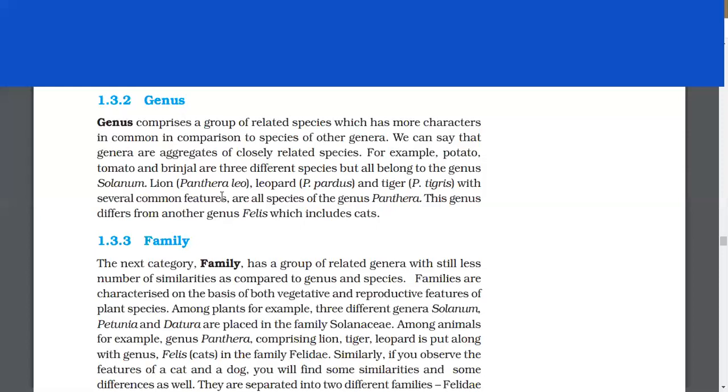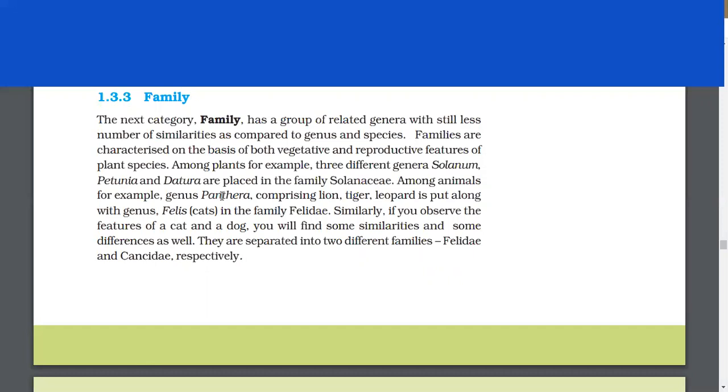Family. The next category, family, has a group of related genera with still less number of similarities as compared to genus and species. Families are characterized on the basis of both vegetative and reproductive features of plant species. Among plants, for example, three different genera - Solanum, Petunia, and Datura - are placed in the family Solanaceae.